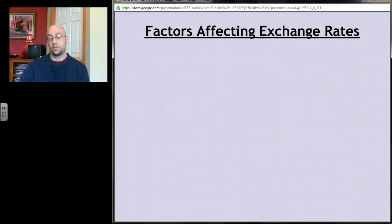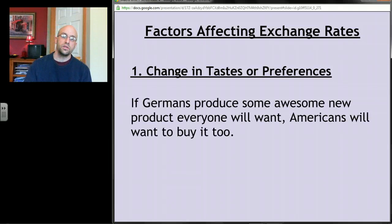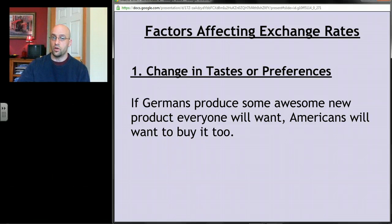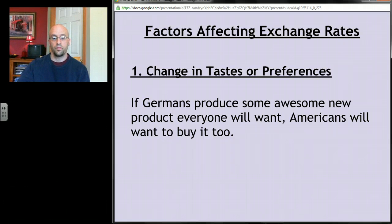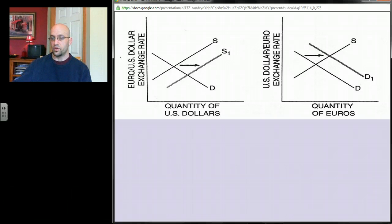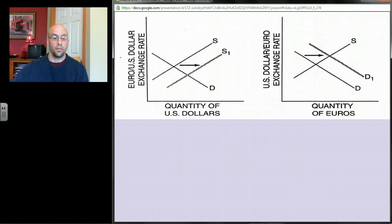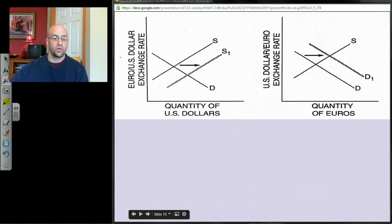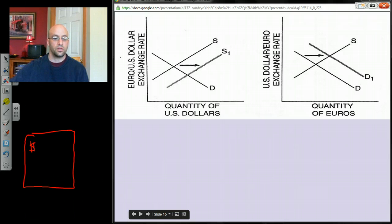Now let's look at what affects exchange rates — the most important part of this screencast, and what's most likely to appear on the AP exam. First: a change in tastes and preferences. Say Germany produces an awesome new product that everyone in the world wants, including Americans. Germans don't want dollars — they want euros. So Americans need to convert dollars into euros to buy German goods.